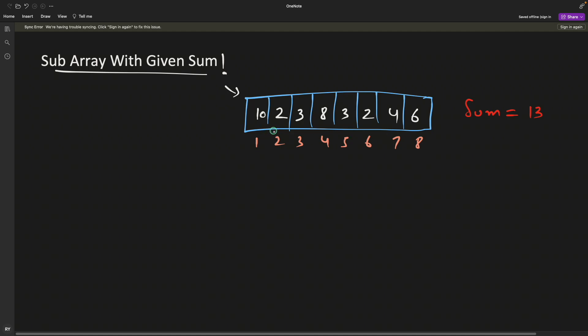You have this sum given as 13. Now the point is you have to find the first occurrence that summing those numbers would result in 13. So if you'll say this 10 plus 2 is 12, and then 10 plus 2 plus 3 is 15, which is greater than 13, so we cannot have this combination.